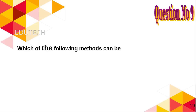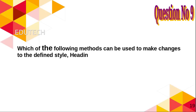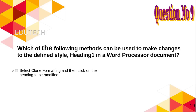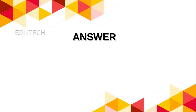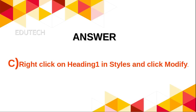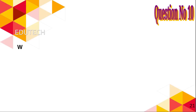Question 9: Which of the following methods can be used to make changes to the defined style Heading 1 in a word processor document? A. Select clone formatting and click on the heading to be modified, B. Select the heading to be modified and click on font color tool, C. Right-click on Heading 1 styles and click Modify, D. Click tool exported directly as PDF. Answer: Right-click on Heading 1 in styles and click Modify.